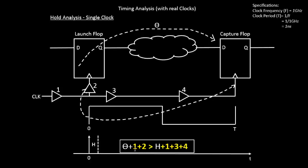So it should be something like this: 1 plus 2 is the time at which it receives the edge plus the combinational delay. And it should be greater than 1 plus 3 plus 4 when the capture flop receives the edge plus the processing time of the capture flop.